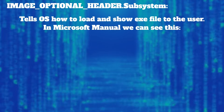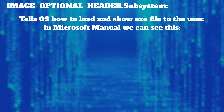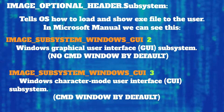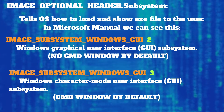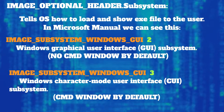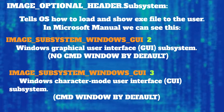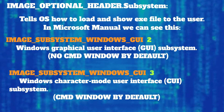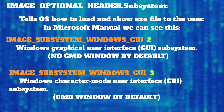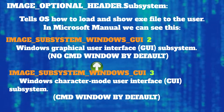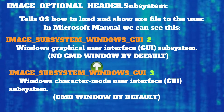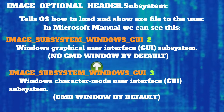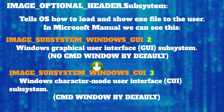Subsystem tells the OS how to load and show an EXE file to the user. In the Microsoft manual we can see this. The first value tells Windows to load the EXE file in graphical mode — in Win API, the console window is hidden by default, and every window must have a handle and be created separately. The second value tells Windows the loading app is a standard console app and the CMD window is shown by default. Changing this value in a console mode app to graphical mode will hide the app's window, and it works the same the other way around.